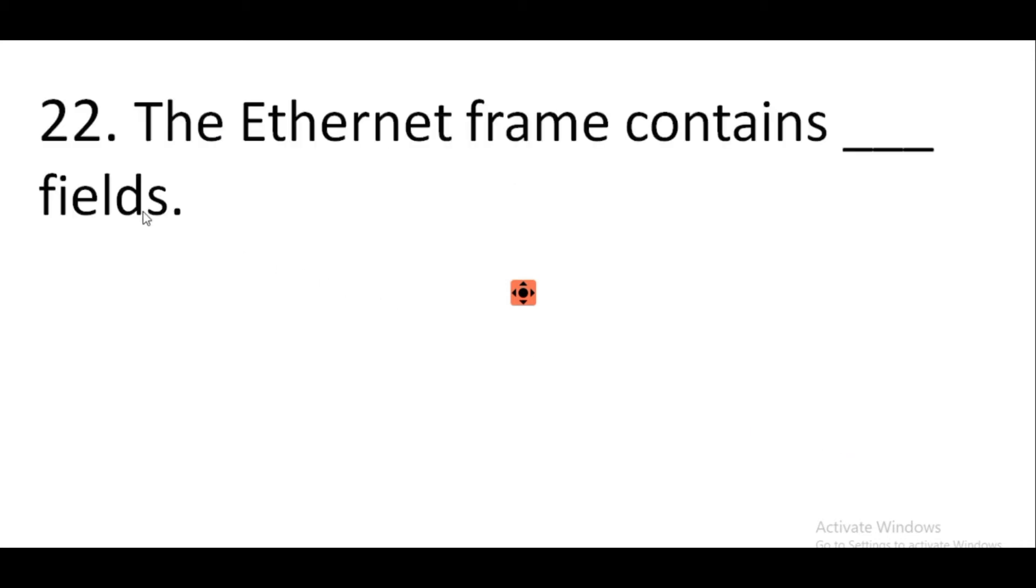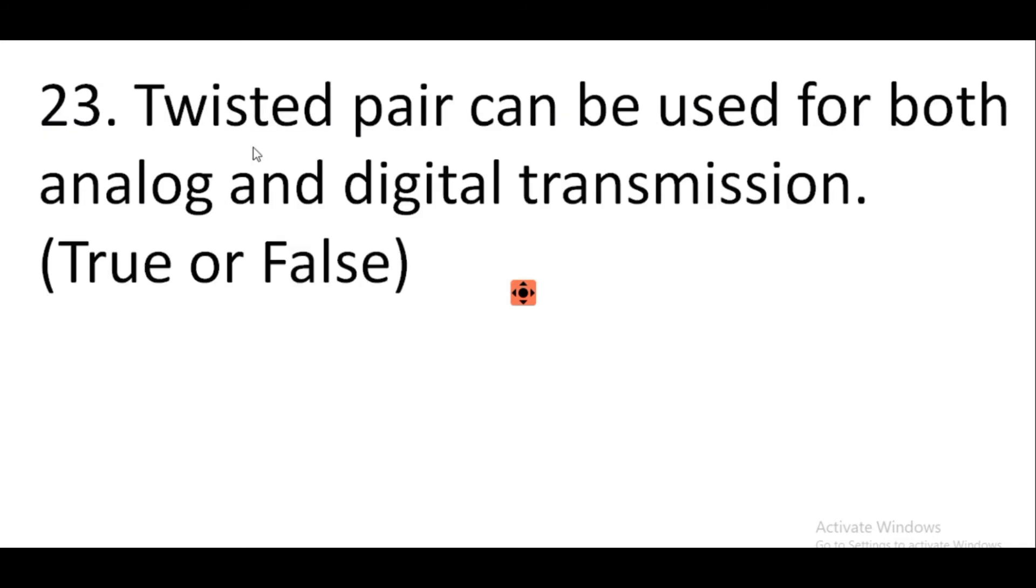Question number 22: The ethernet frame contains seven fields. Answer: Seven. Question number 23: Twisted pair can be used for both analog and digital transmission. True or false? Answer: True.